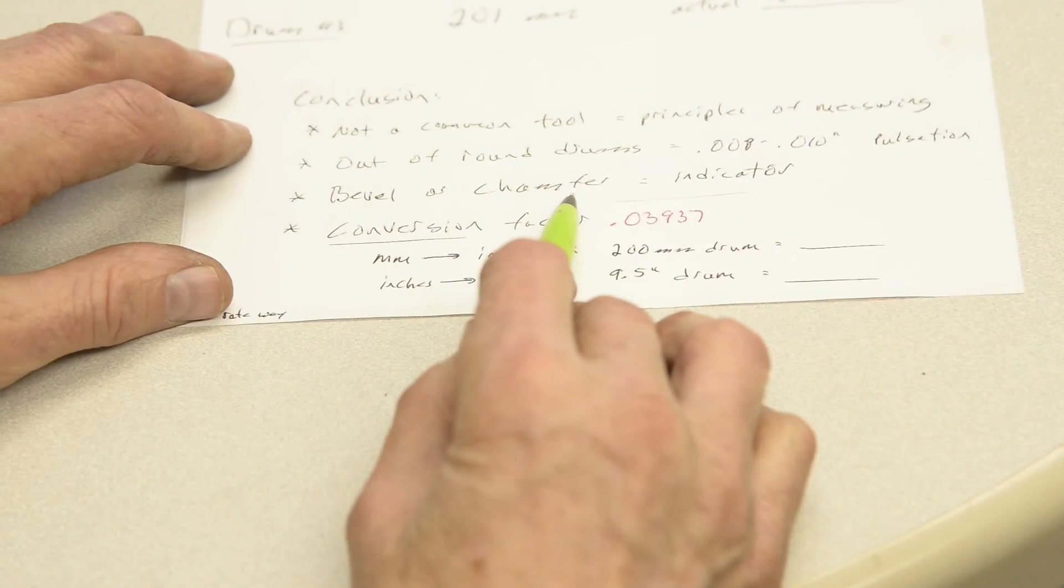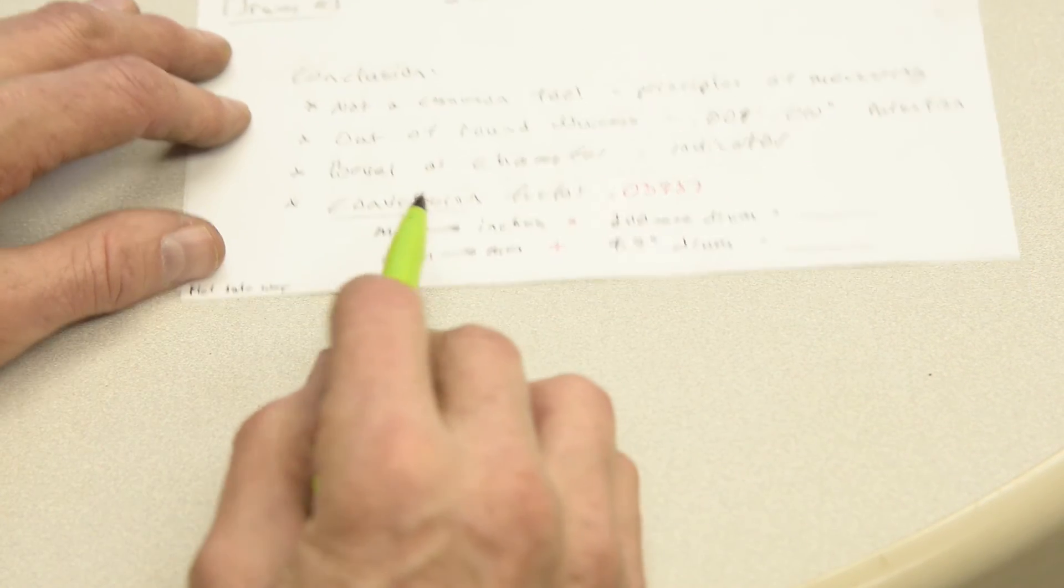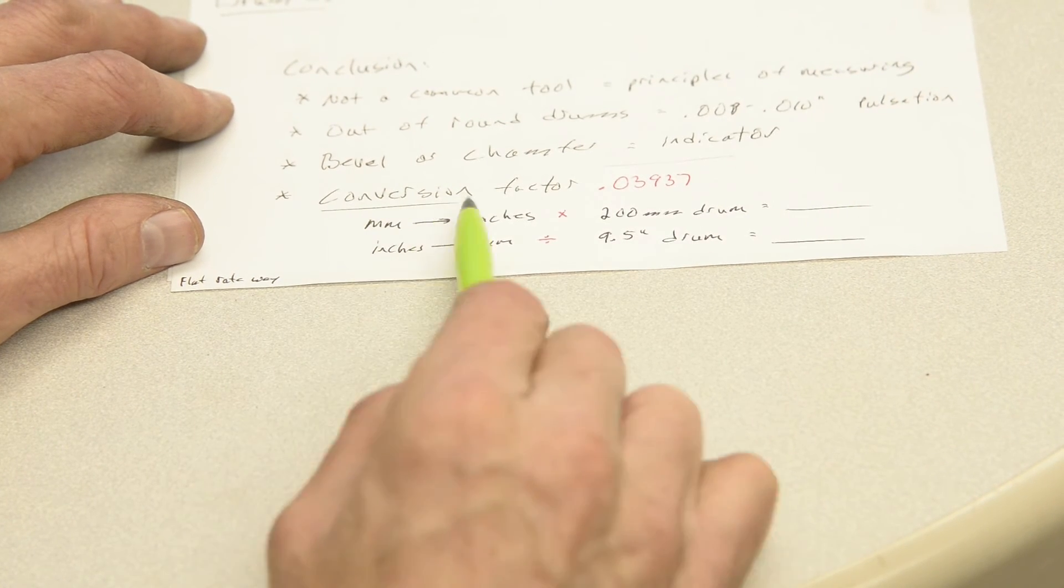We already talked about the bevel or chamfer. Again, it's an indicator, it's not a sure test, but it is an indicator. Lastly, I want to close with this conversion factor. I wrote it in red so it would be easily recognized.